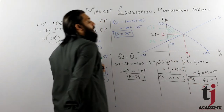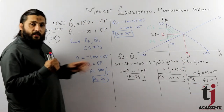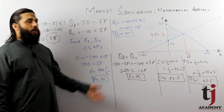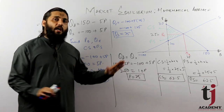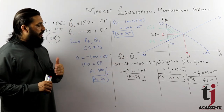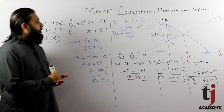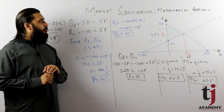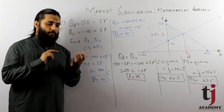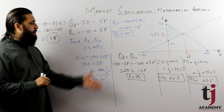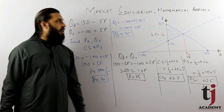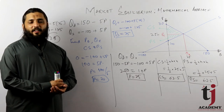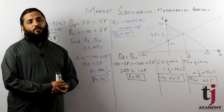Producer surplus में भी base 25 है और height 25 minus 20 = 5 है — इत्तिफाक से same value। तो producer surplus भी = 62.5। इनका same answer आना, same price और quantity आना — यह इत्तिफाक है, values कुछ भी आ सकती हैं। यह था market equilibrium की mathematical approach — equilibrium price, equilibrium quantity, consumer surplus, producer surplus। अगर यह video पसंद आई तो like, share करें, channel subscribe करें और bell icon पर click करें।